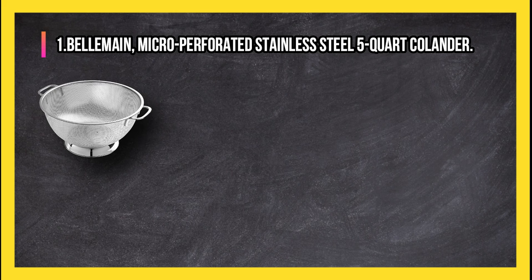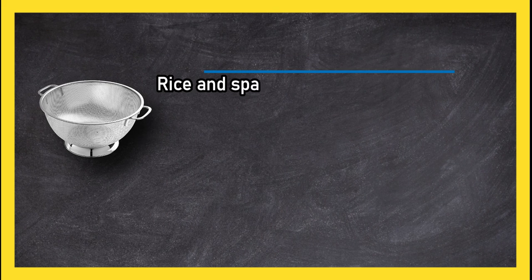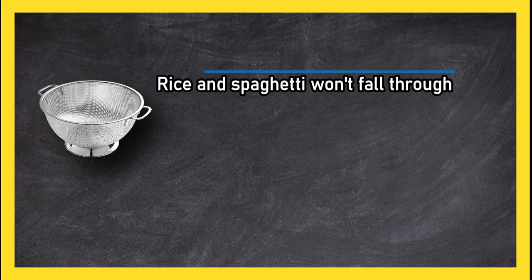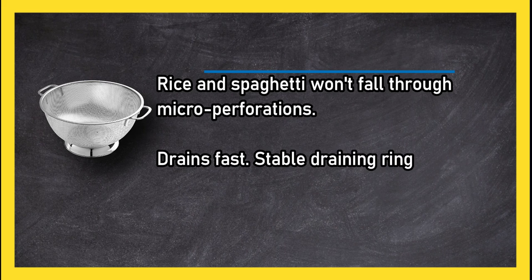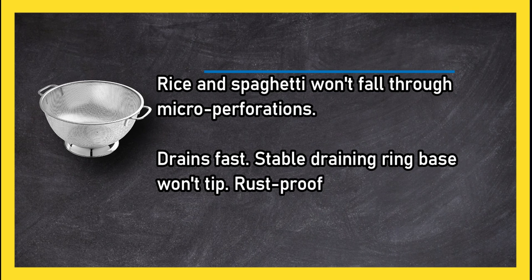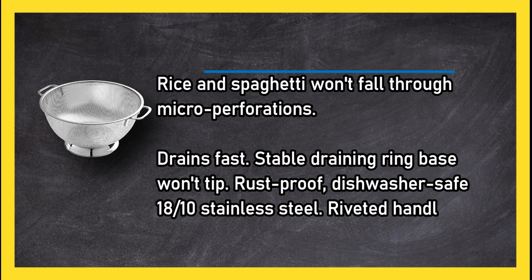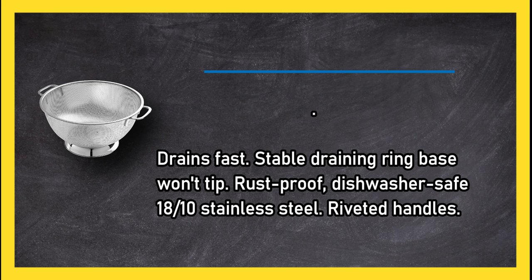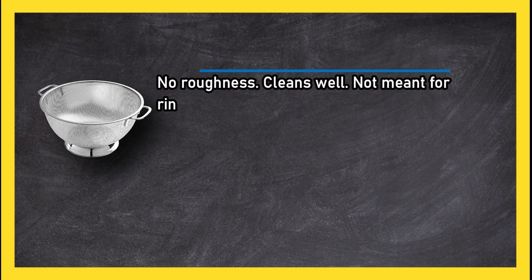At number one: Bellemain micro perforated stainless steel 5 quart colander. Rice and spaghetti won't fall through micro perforations. Drains fast, stable draining ring base won't tip. Rust proof dishwasher safe 18/10 stainless steel, riveted handles. No roughness, cleans well. Not meant for rinsing dry rice or quinoa.